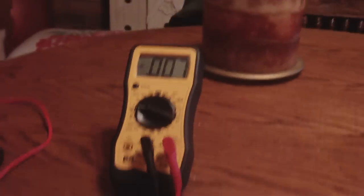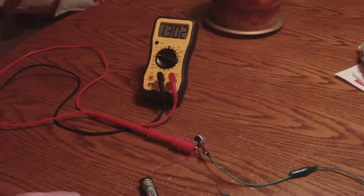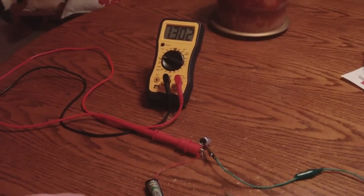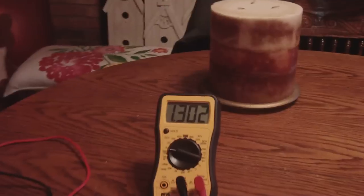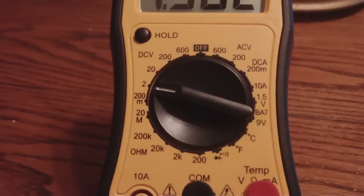And show you the voltage that's inside the battery again. 1.302. And that is in the 2 volt setting.